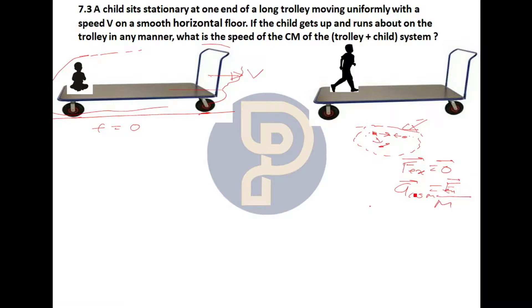Constant — meaning whatever internal forces act and whatever events happen due to internal forces — if the external force is zero, it was zero before and remains zero after. If the external force remains zero, remember that the acceleration of the center of mass becomes zero, and therefore the velocity of the center of mass remains what it was before. This is the key concept behind this question.